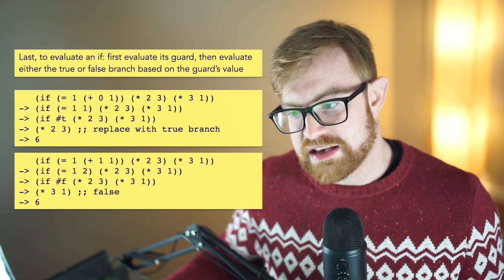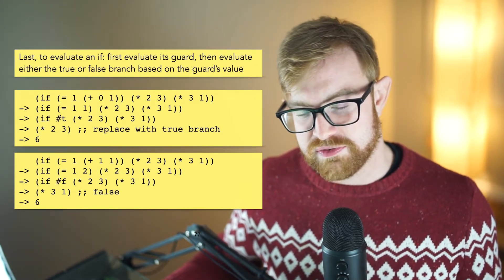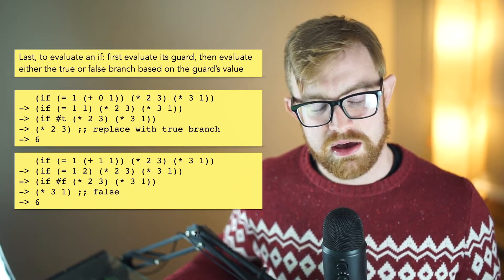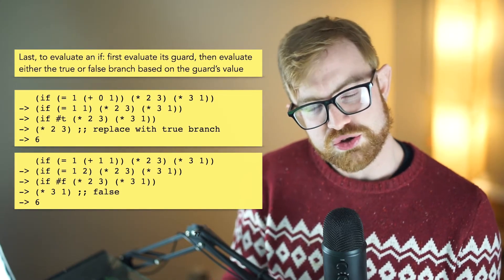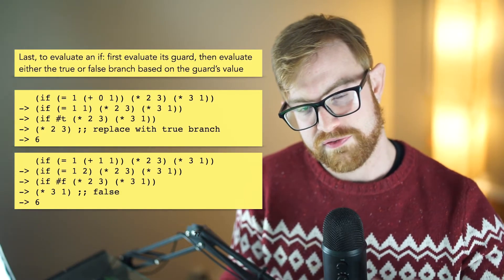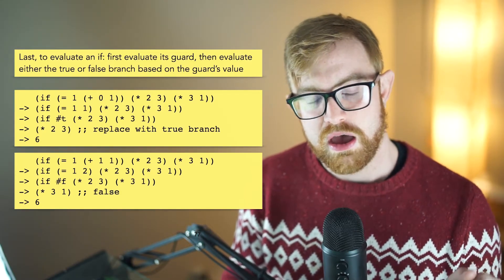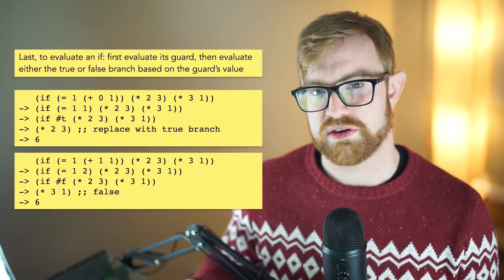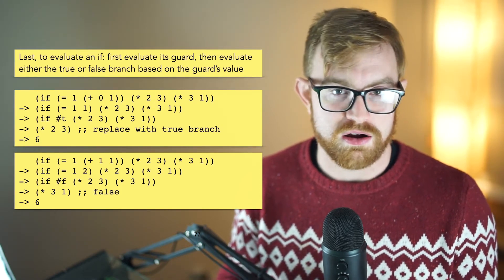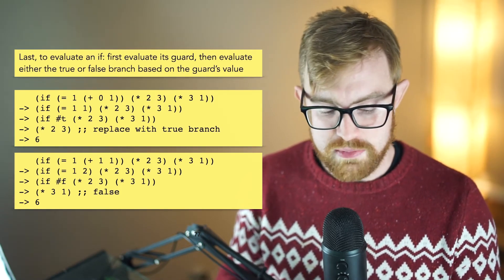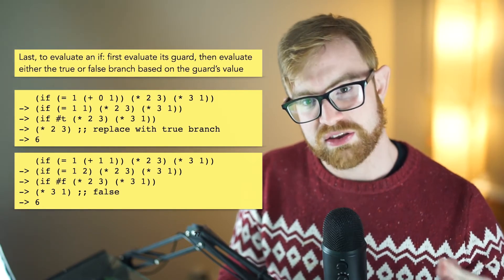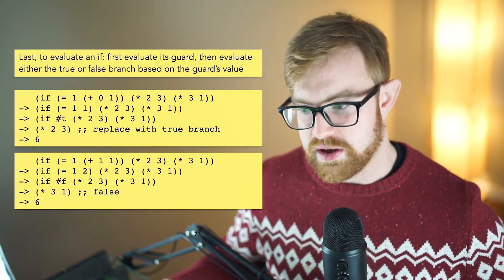The last rule is just that to evaluate an if, first what you do is you evaluate its guard. And then based on whether the guard is true or false, you evaluate either the true branch or the false branch. But you don't evaluate both the true and the false branch before you know what the guard is. You want to make sure that you wait to evaluate the true or the false branch strictly after you evaluate the guard.